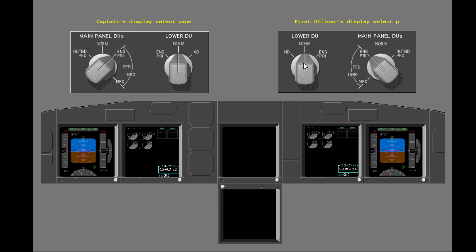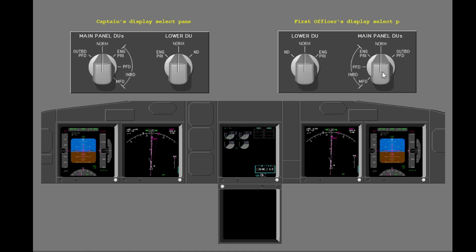Select normal with the captain's main panel DUs selector. The upper DU remains blank because the first officer's main panel DUs selector is set to inboard engine primary. Select normal with the first officer's main panel DUs selector. The displays are in their normal configuration.